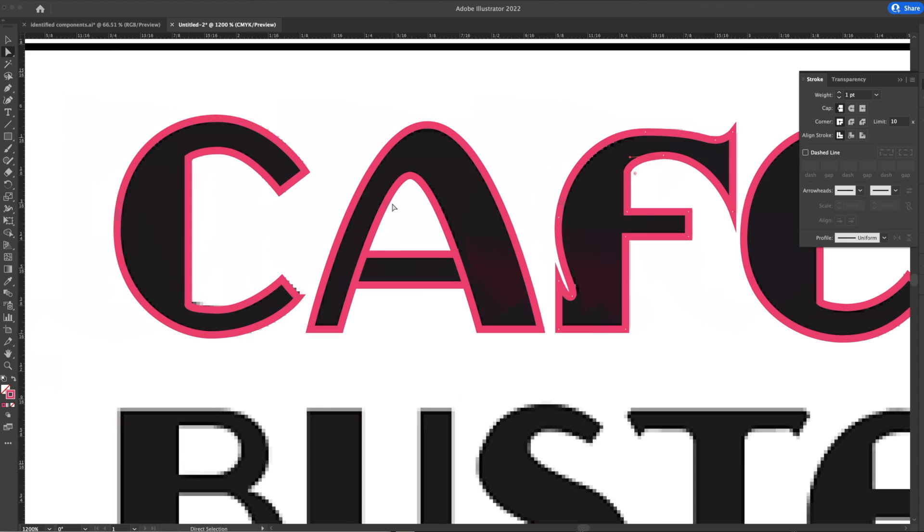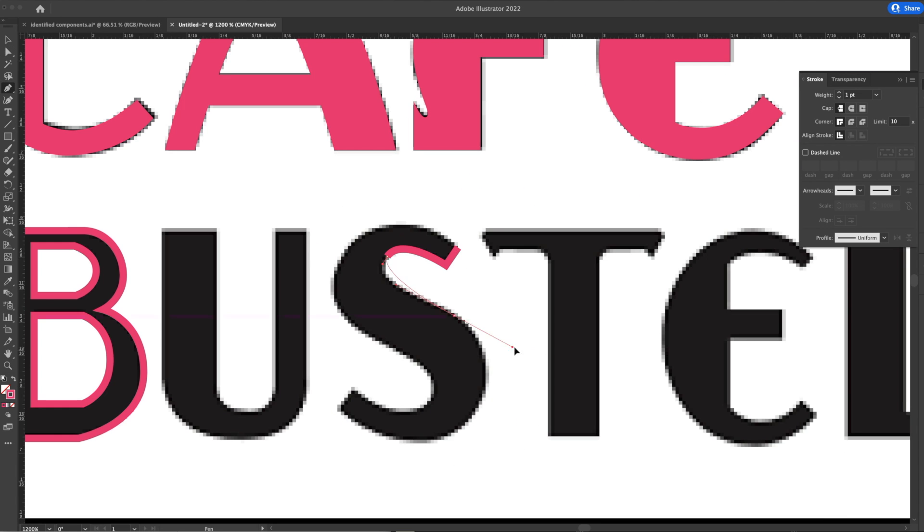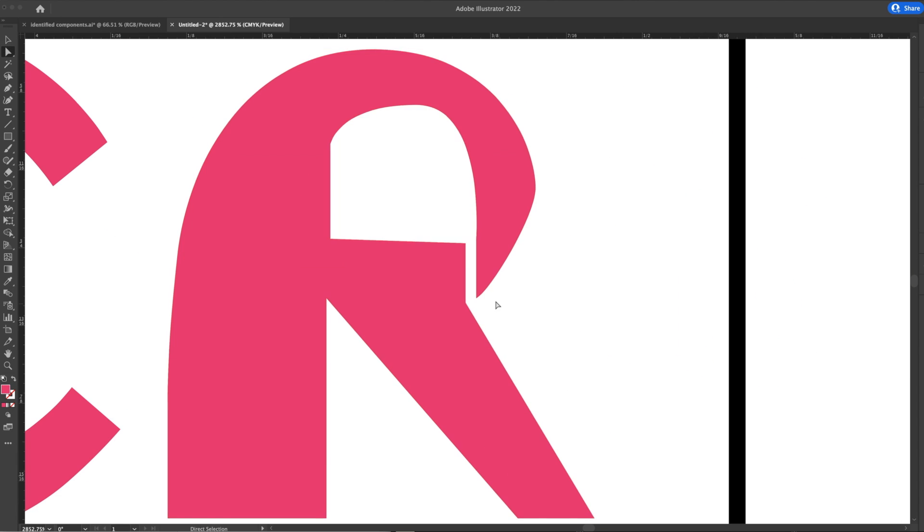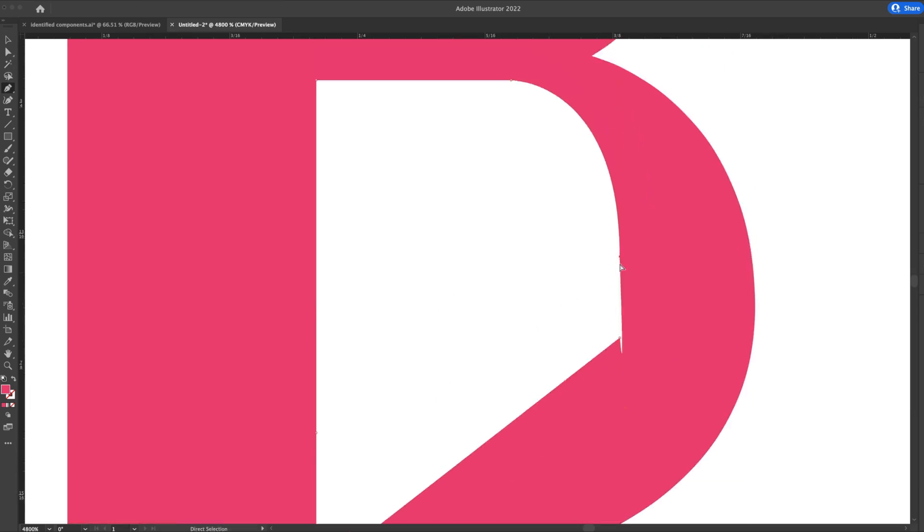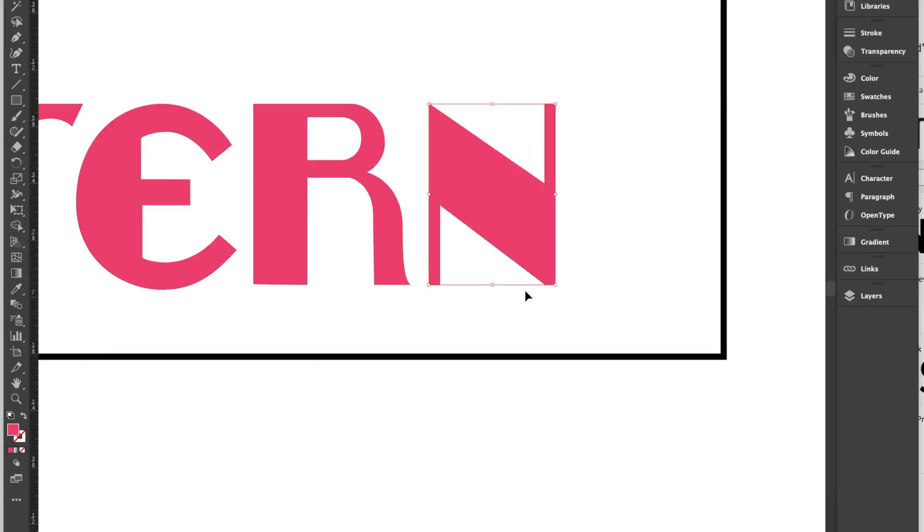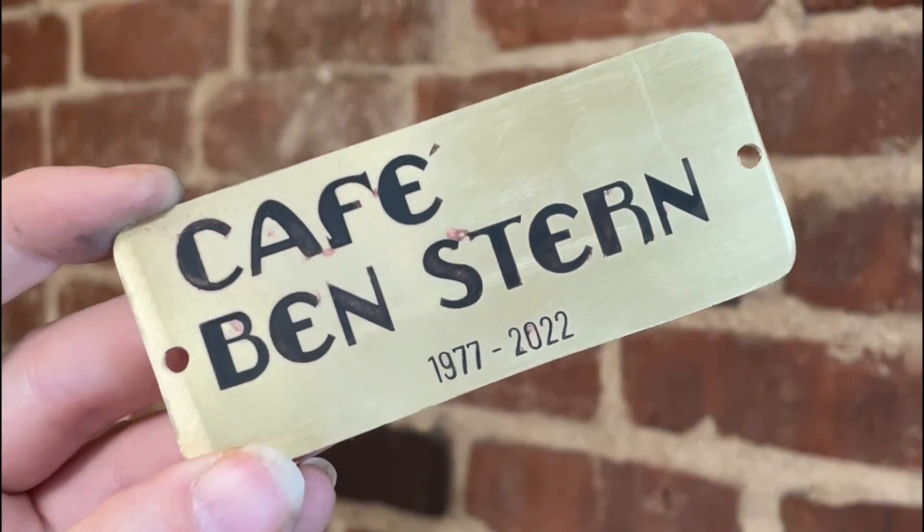I designed the artwork in Illustrator to mimic the Cafe Bustelo logo. Really, I only needed to make up an R and an N since I could just trace the rest of the letters. My brother would have loved this.